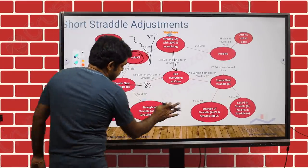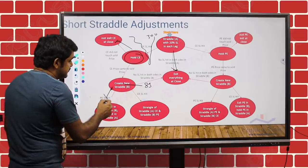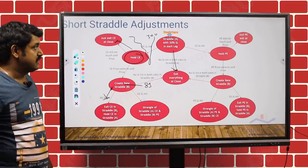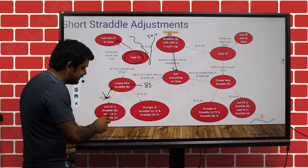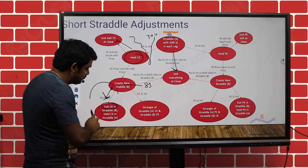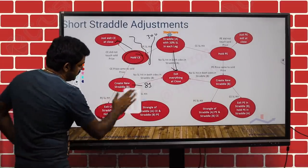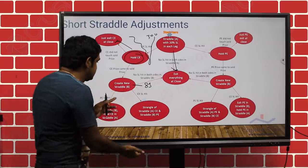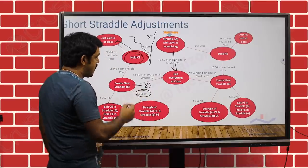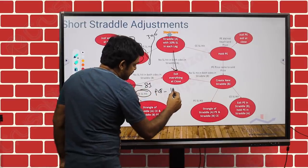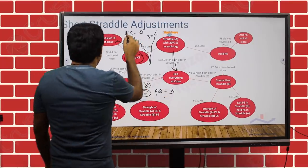Simple logic. After creating Straddle B, if the put stop loss of Straddle B is hit and the market is coming down, obviously the Straddle A call will be in profit — so you don't need Straddle B at all. Exit the Straddle B call, and hold only the naked call of Straddle A. But if the market reverses again and the call stop loss of Straddle B is hit, you now have a call from Straddle A and a put from Straddle B — this is a short strangle.